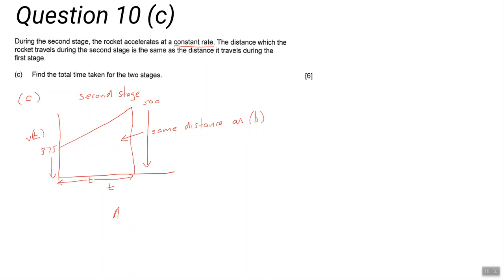The area of the trapezium is half times (375 plus 500) – the mean of the parallel sides – times t. T is what we need to work out. Since the area is the same as the distance in part b, this allows us to work out t in a relatively straightforward way.